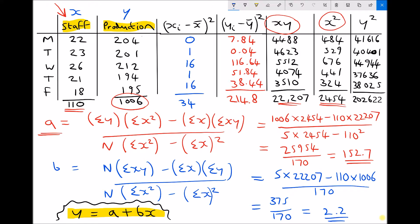So in our formula that's highlighted in the bottom left corner, y equals a plus bx, we know that a is 152.7 and b is 2.2. But what does that actually mean for our data?